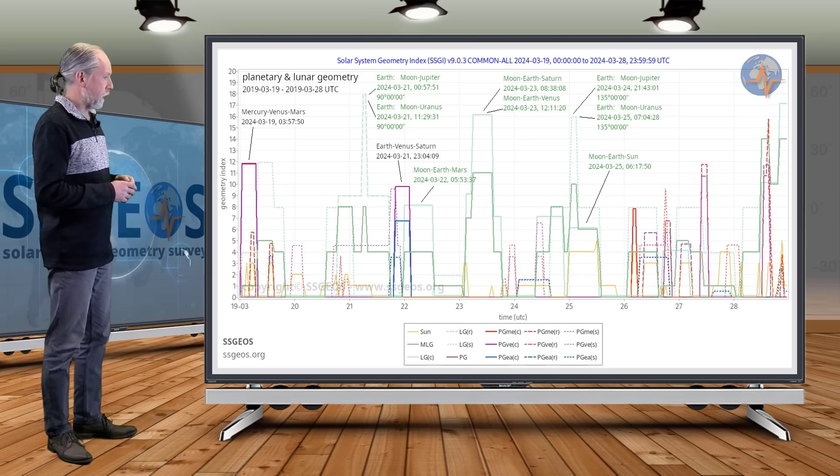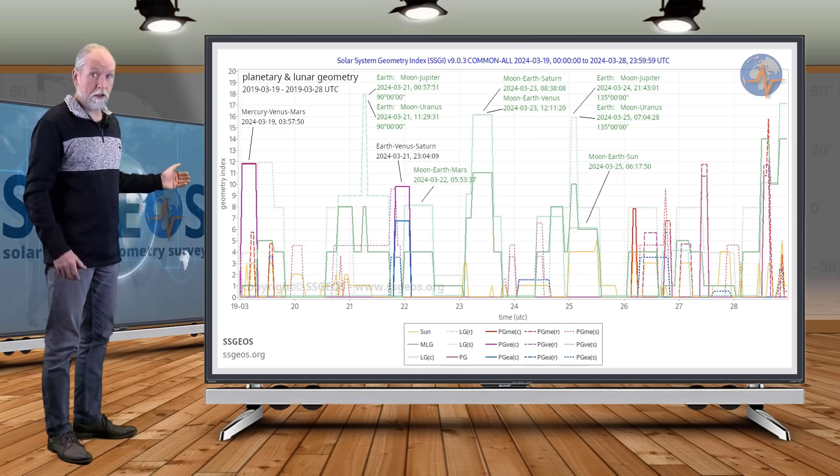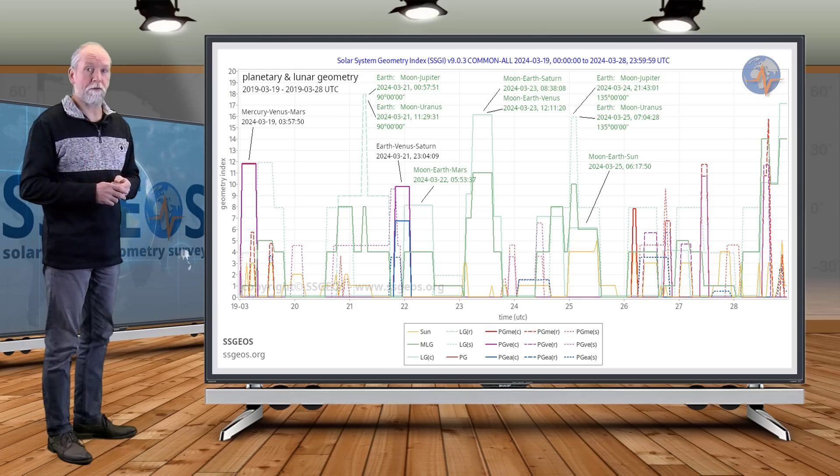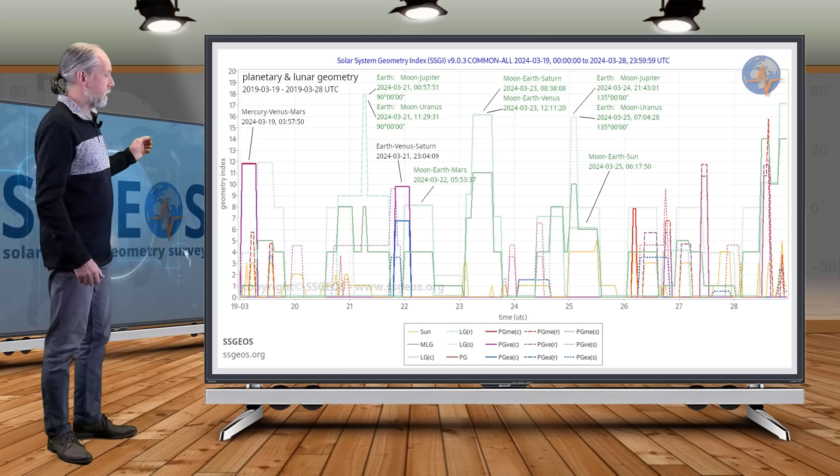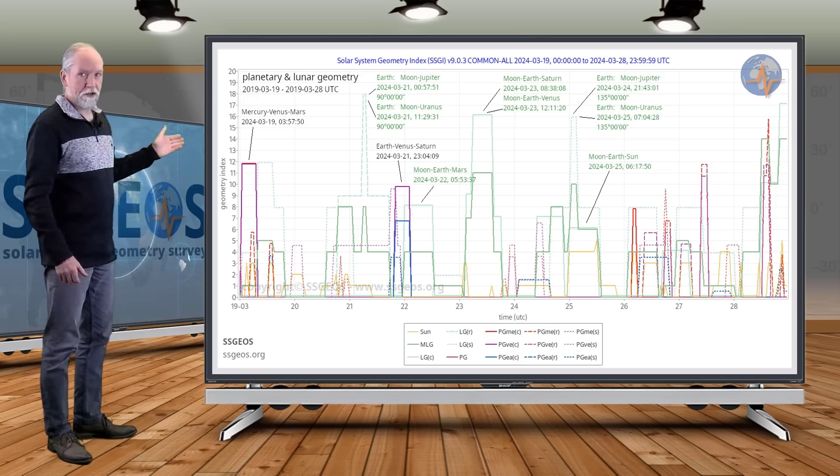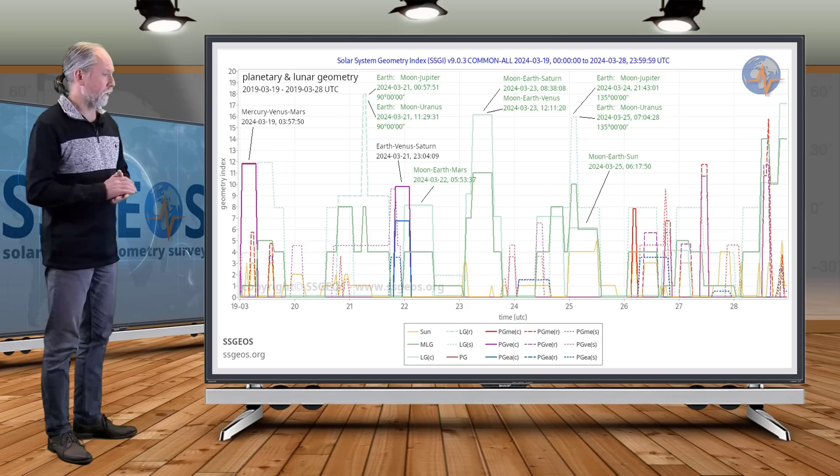So again we have this Mercury-Venus-Mars conjunction this morning that could result in a stronger seismic event because we have Mercury-Venus combined, and then this lunar geometry on the 21st with Jupiter and Uranus and also on the 25th, probably not too critical.